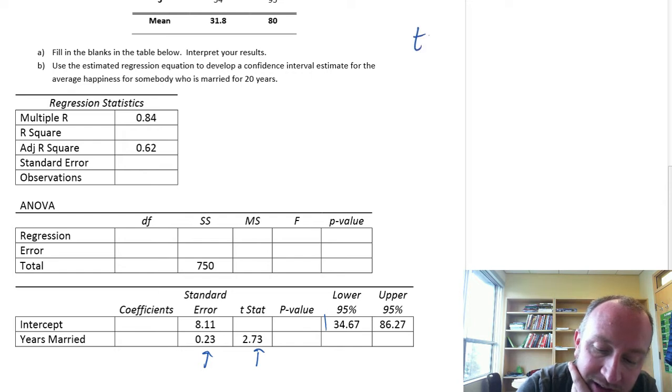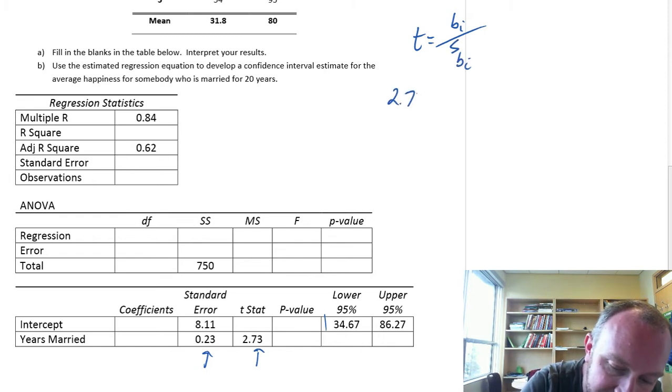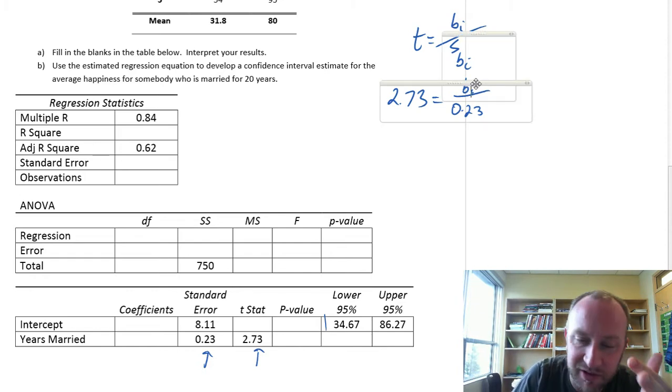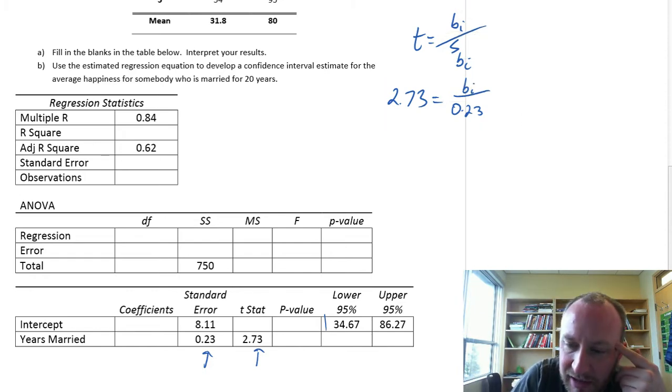If you remember, the test statistic for the hypothesis test is that coefficient divided by its standard error. Here we were given a t statistic, and we were given a standard error of 0.23. That's a much shorter way to calculate that slope coefficient than to calculate all of those differences and squaring them and adding everything together.